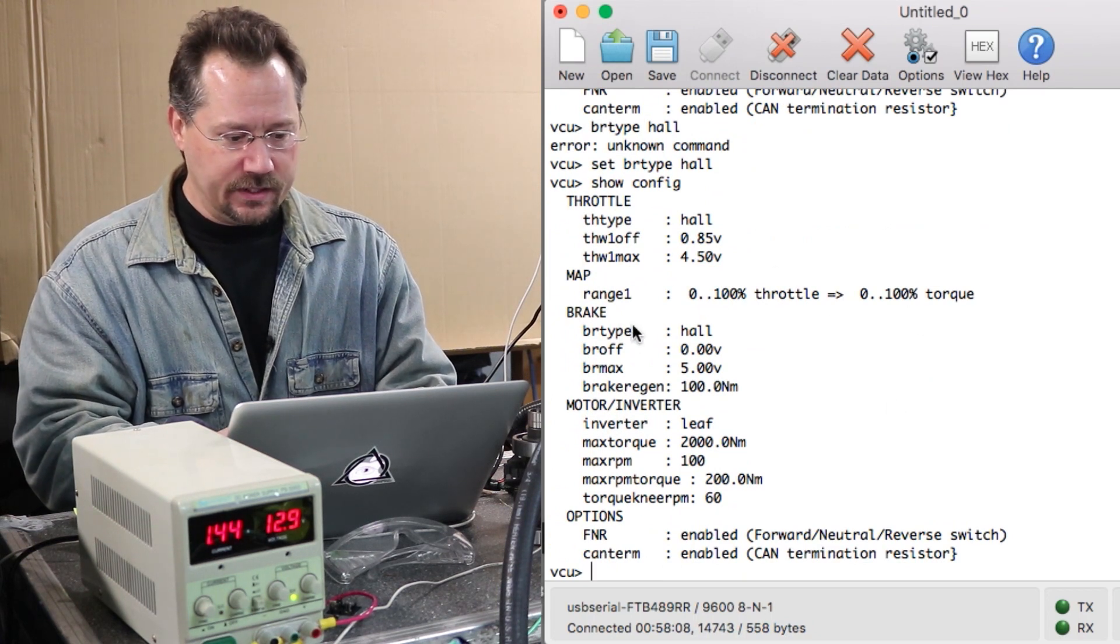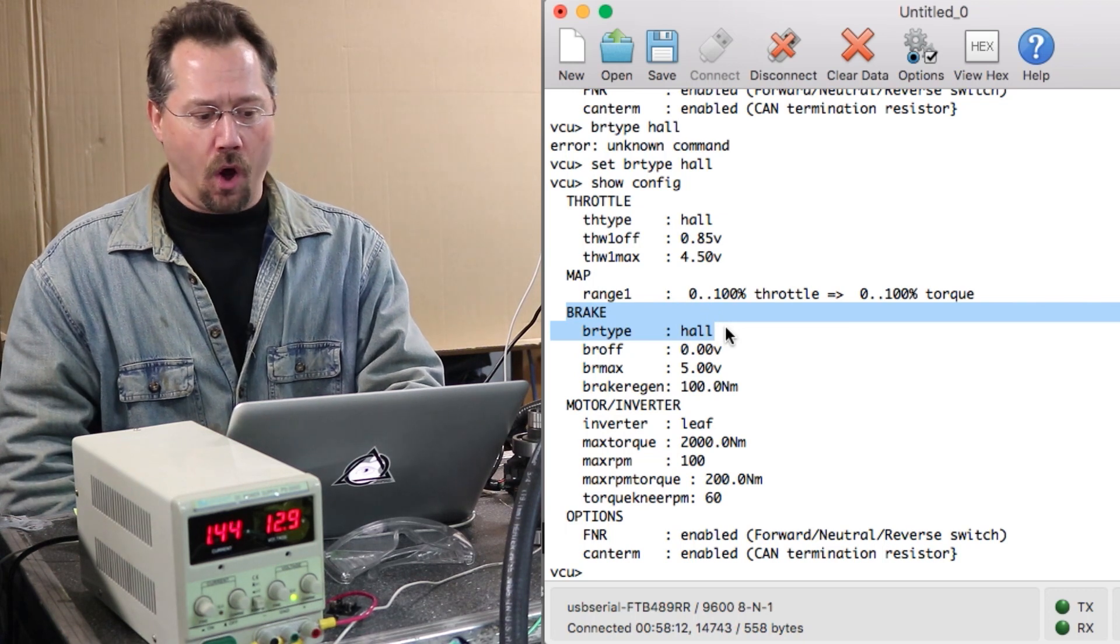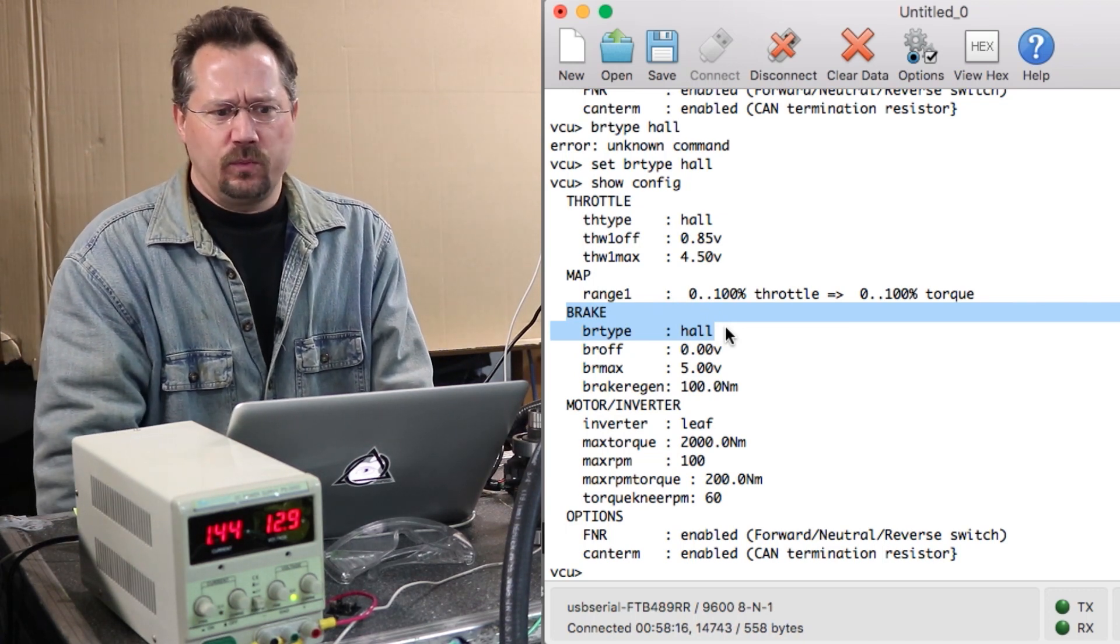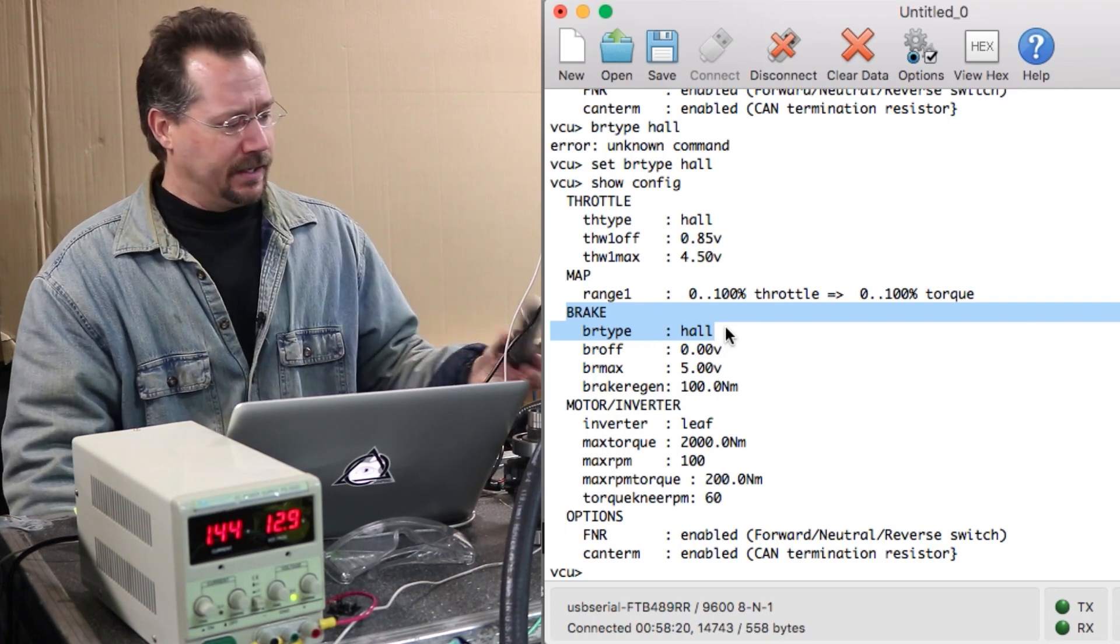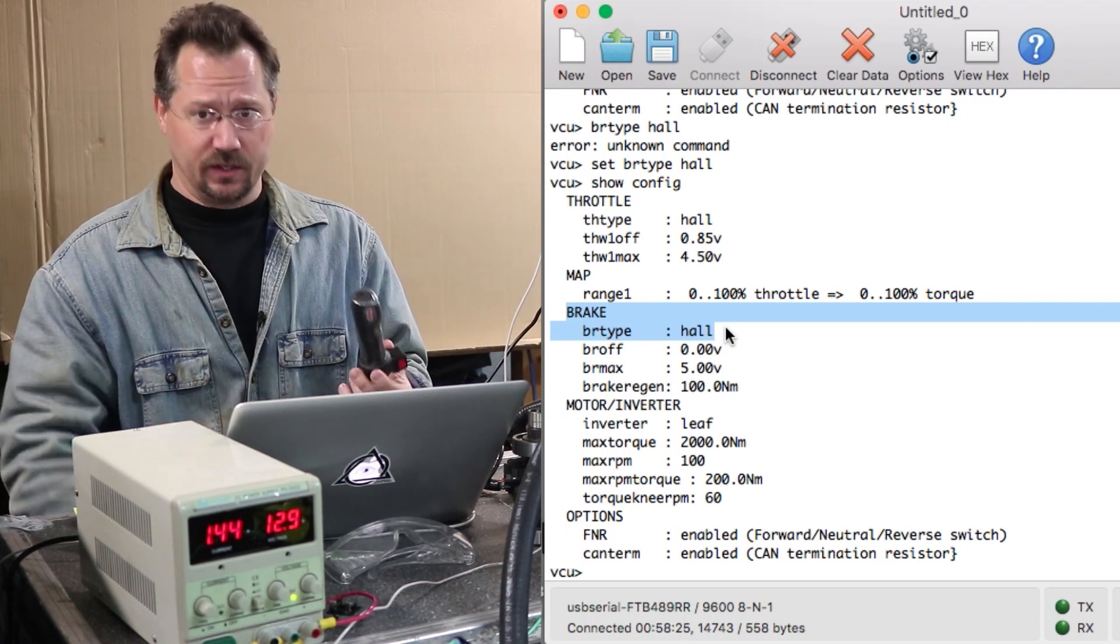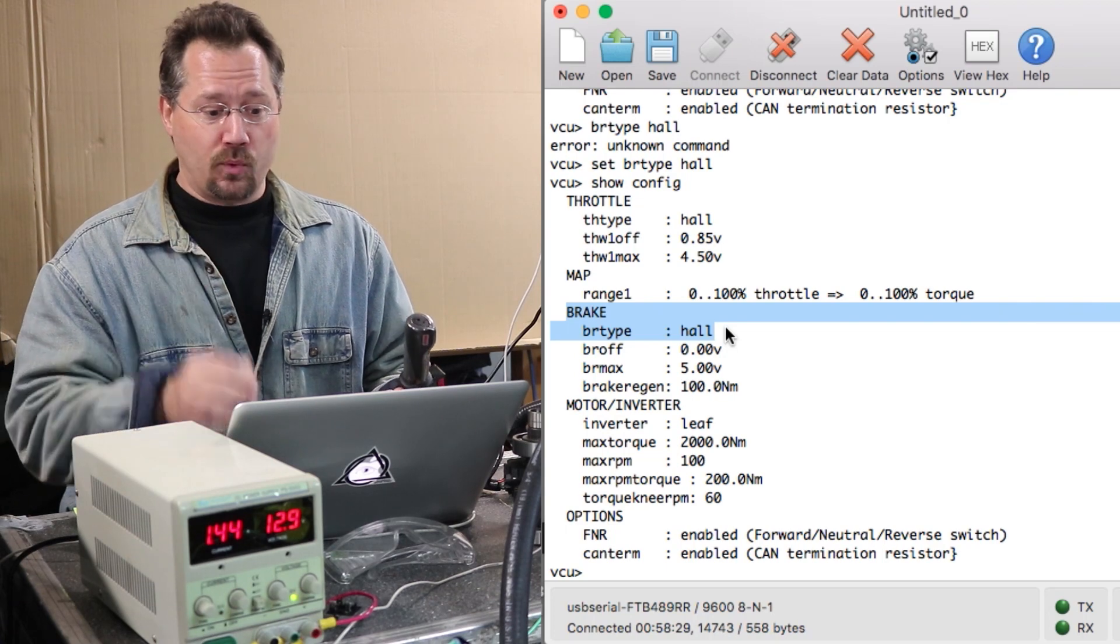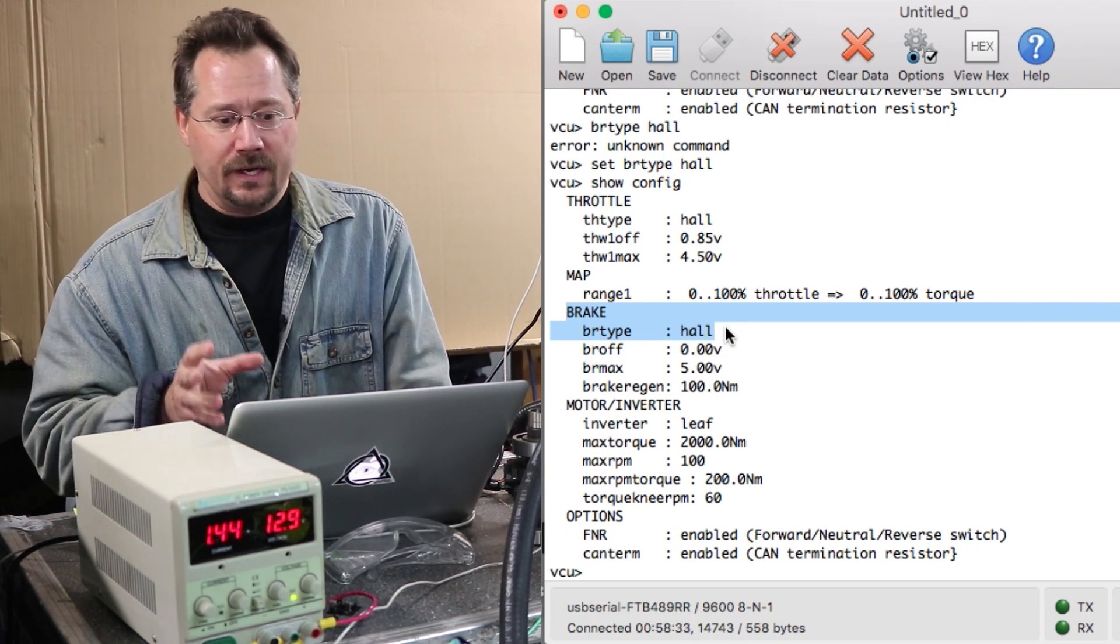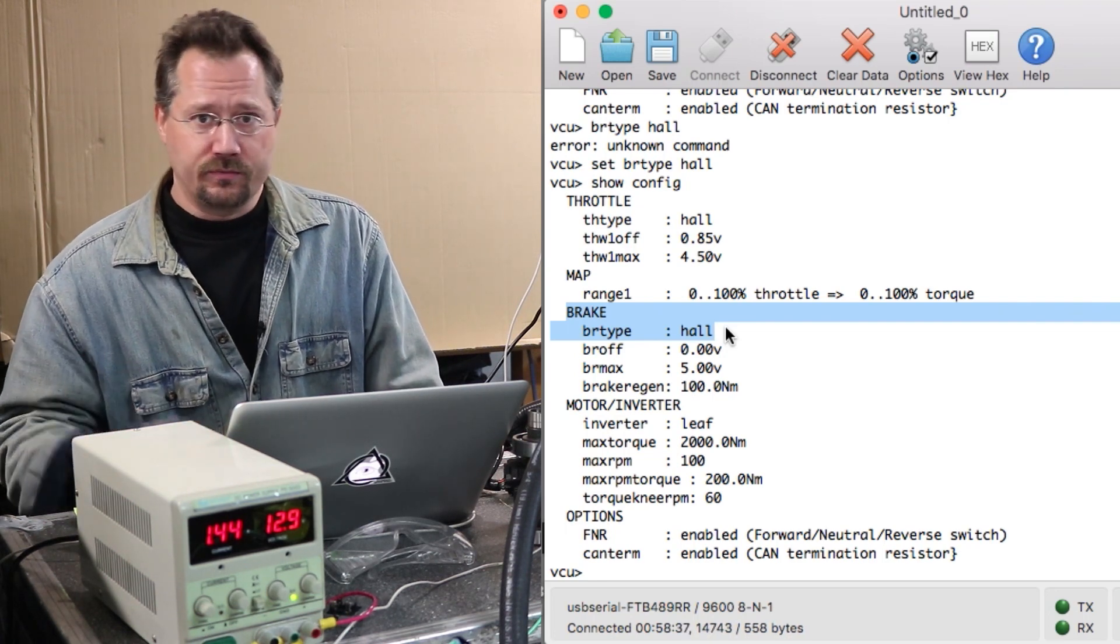So now here under brake type it shows hall. Hall effect is typically that's associated with a throttle. For example my little scooter throttle here is a hall effect throttle and basically when you twist it it's going to give a signal between zero and five volts. If you set brake to hall what that will do is it expects a signal from a different hall effect sensor.